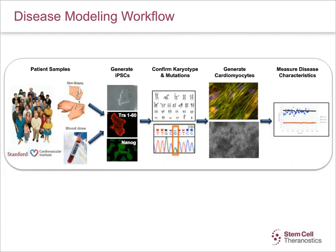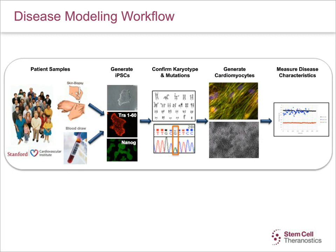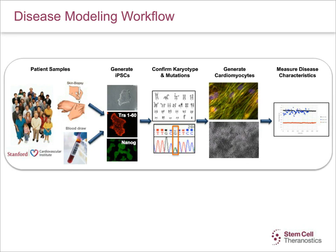This slide describes the disease modeling workflow. As a startup company, our first goal was to establish standardized SOPs, reagents, and processes that are consistent and reproducible. We have these processes in place for iPSC derivation, characterization, banking, and also for cardiomyocyte differentiation. After obtaining samples of fibroblasts and peripheral blood mononuclear cells, PBMCs, from the Stanford Cardiovascular Institute Biobank, we reprogrammed them using the CytoTune Sendai virus reprogramming kit, and we get a decent number of colonies with both healthy and diseased somatic cells.